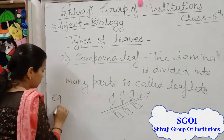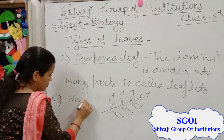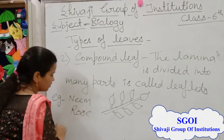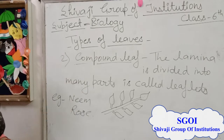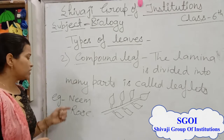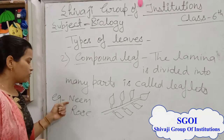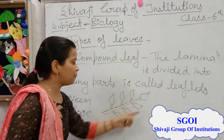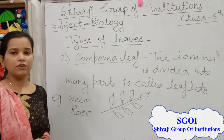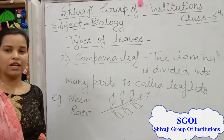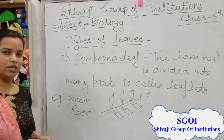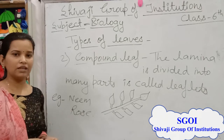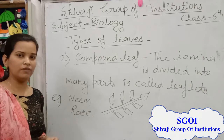For example, neem and rose. These leaves are called compound leaves. You can see the leaves of these plants — neem and rose — their leaflets are present. You can see the difference by looking at the leaves of guava, mango, neem, and rose. That will help you understand the types of leaves.